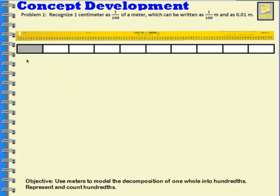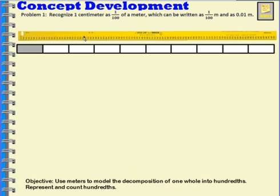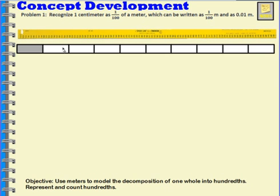What I have here is an area model that I've taken and made the same size as my meter stick. And then I separated or partitioned my area model into ten equal parts. And then I shaded in one of those parts. So this is showing that I have one-tenth shaded.